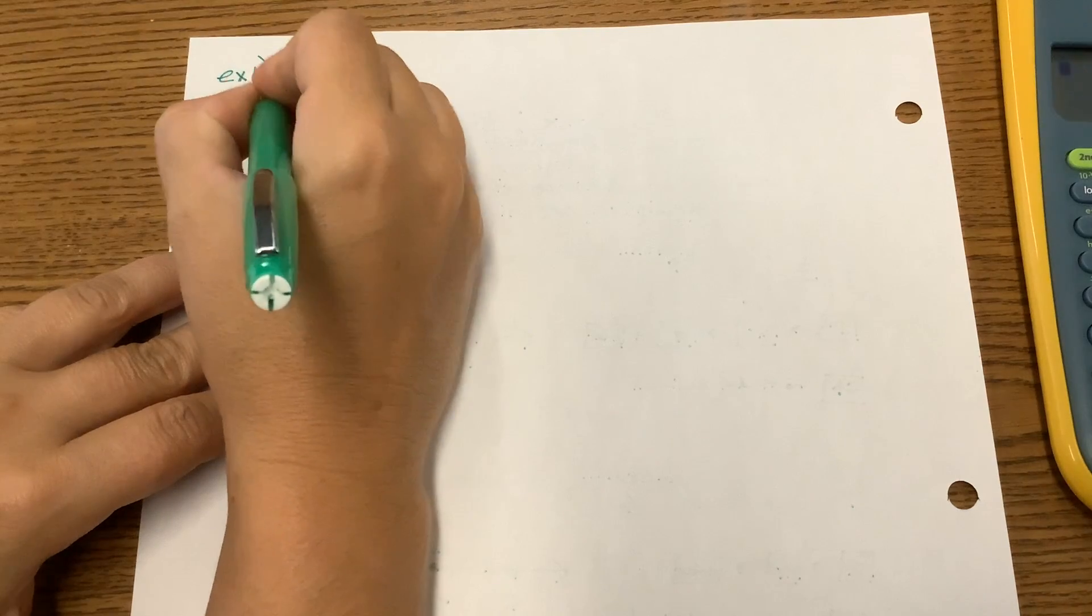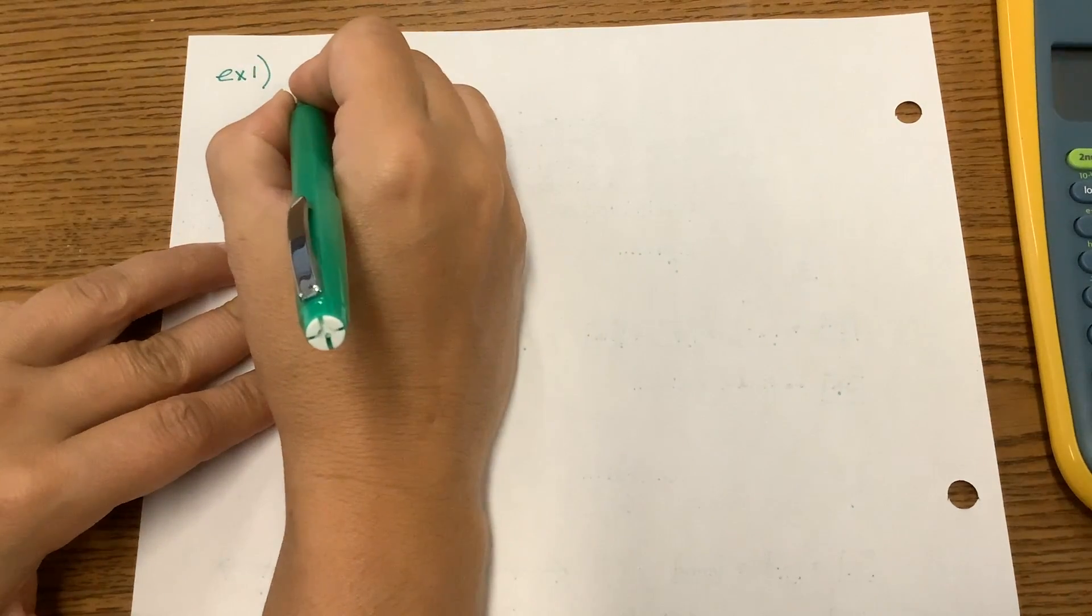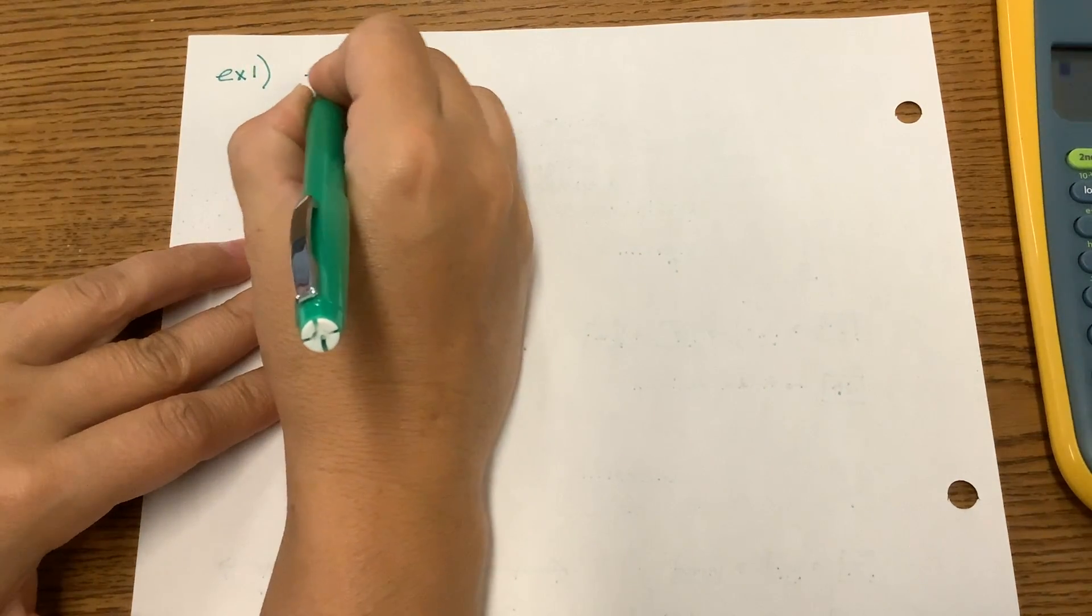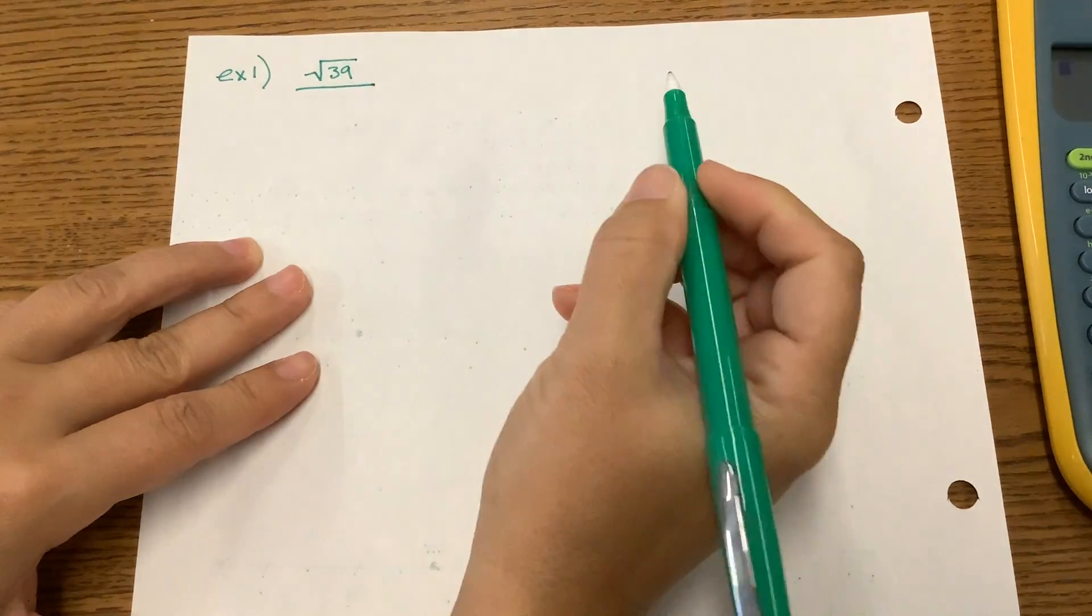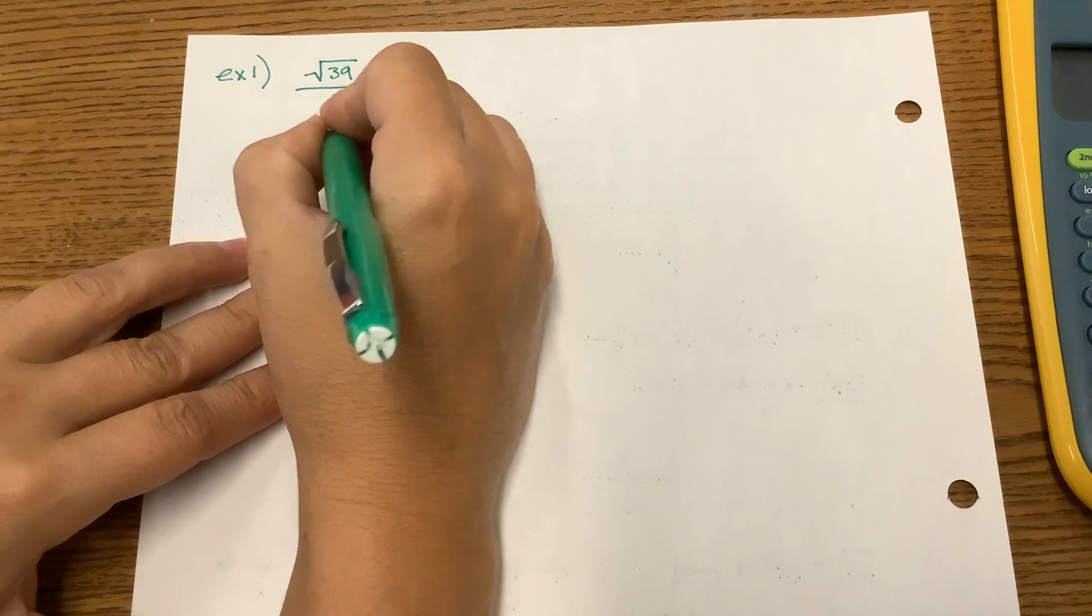So example one, and this is in the form of a fraction. It's the square root of 39, and it's the numerator over a denominator of three.